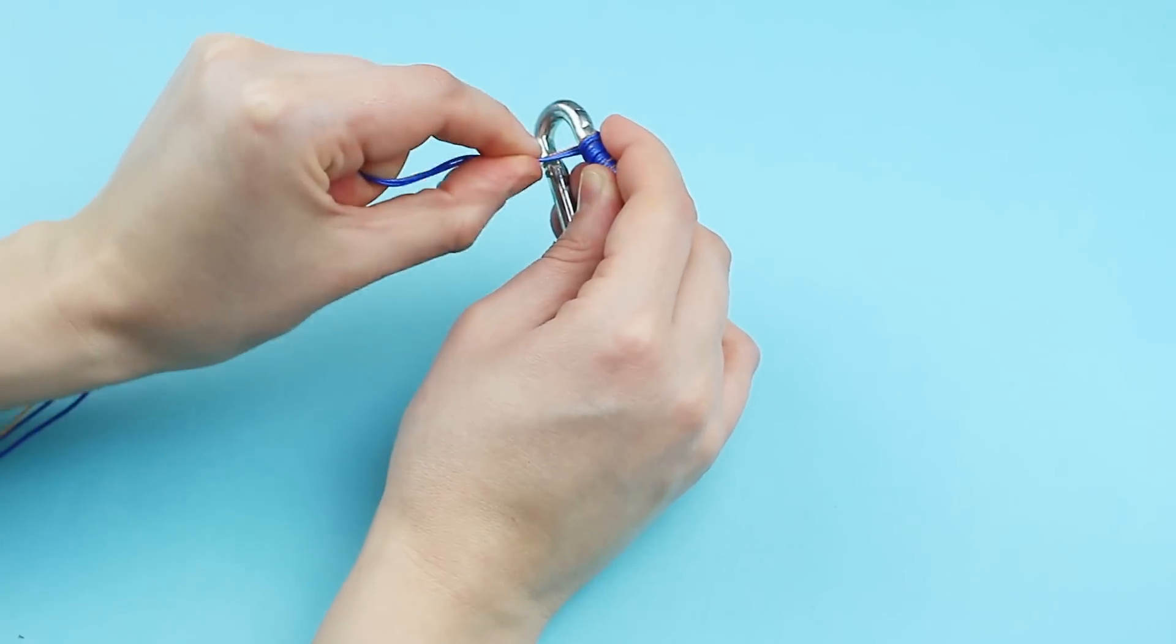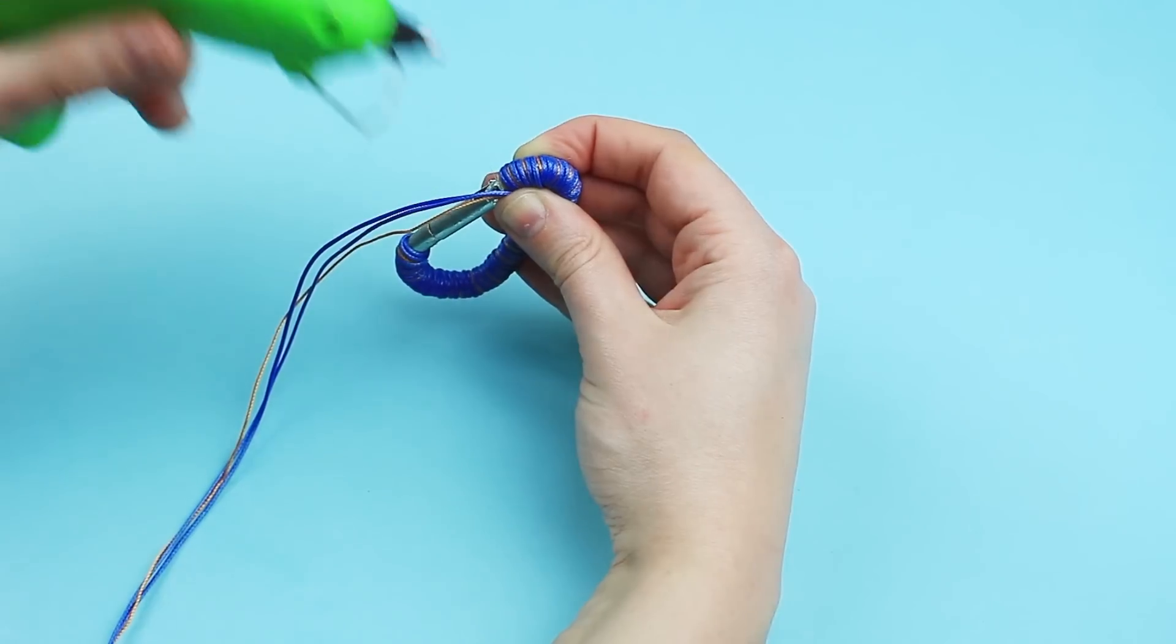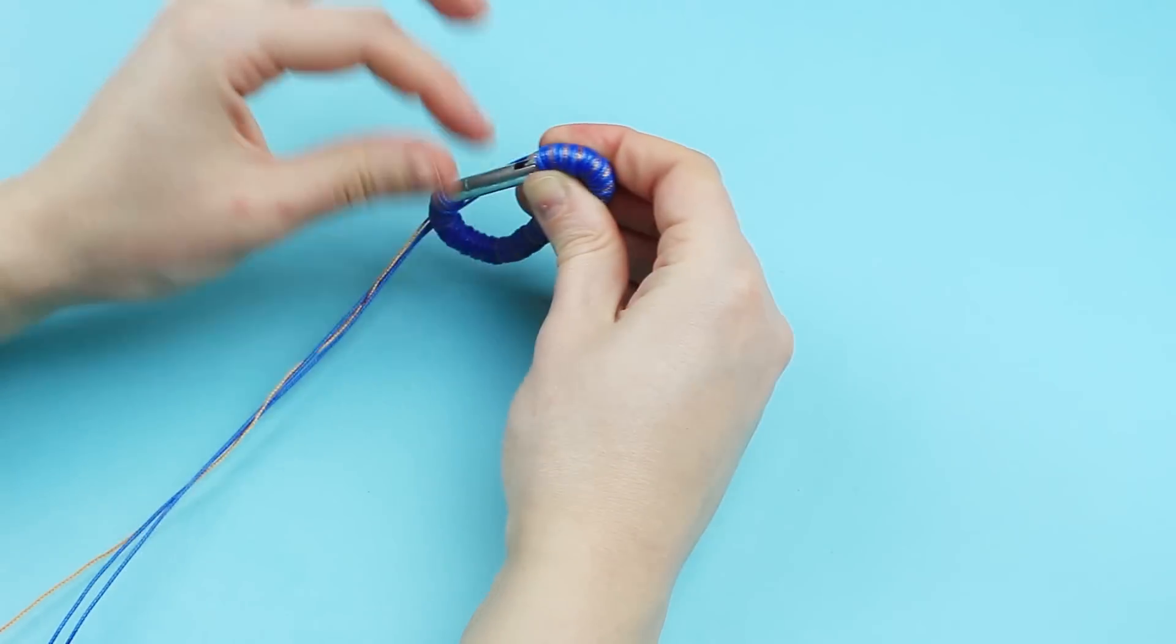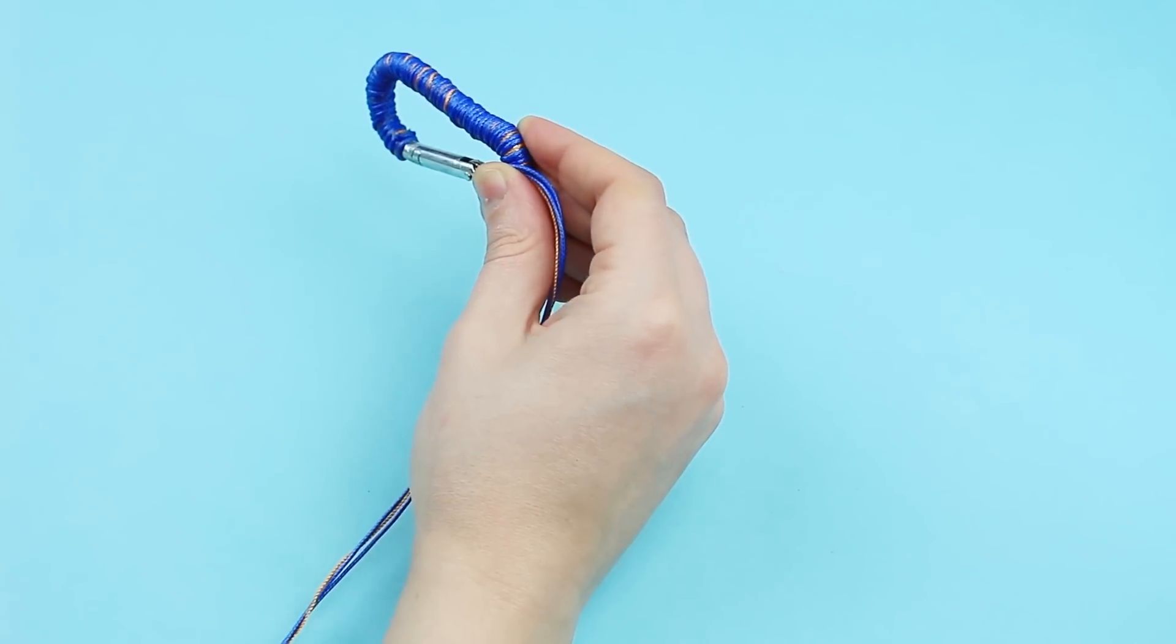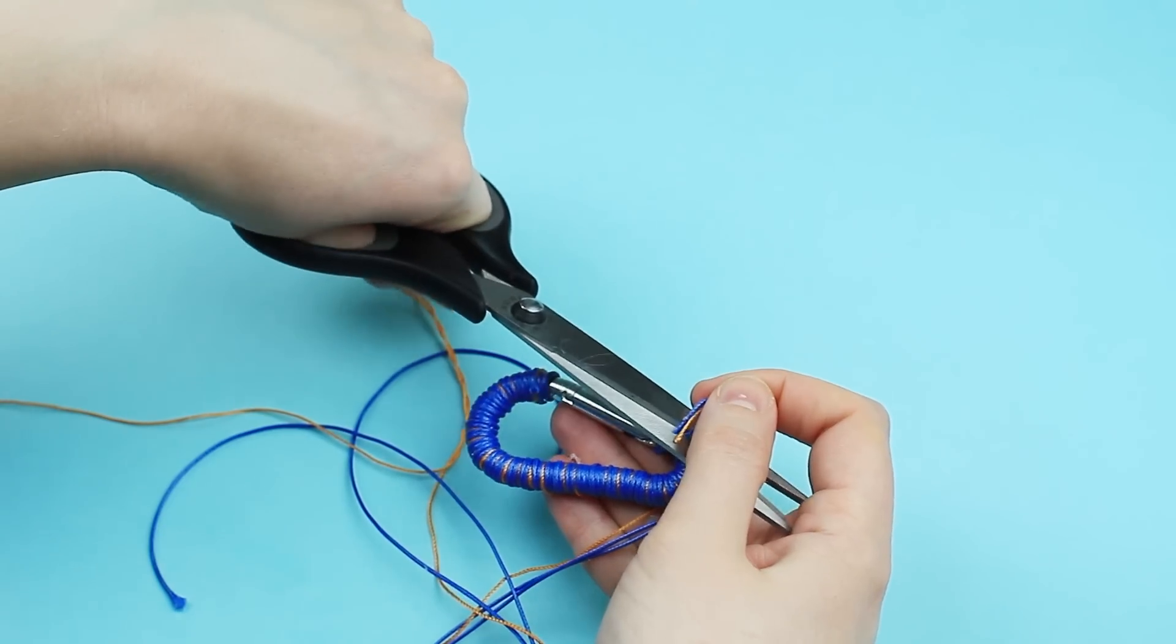Wrap the carabiner except the clasp. Hot glue the thread ends. Cut off the excess.